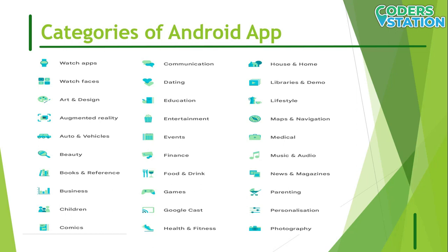Other app categories include shopping (online shopping, auctions, coupons, price comparison), social (social networking), sports (sports news, score tracking, fantasy team management, game coverage), tools (tools for Android devices), travel and local (trip booking, ride sharing, taxi, city guides, local business information, trip management), video players and editors (video players, video editors, media stories), and weather (all weather report apps).